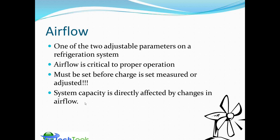System capacity — how much the system is able to cool, heat, or dehumidify the air — can be directly affected by changes in airflow. That's where maintenance factors come into play. If filters get dirty and you choke down airflow, you can affect system capacity, get a blocked or frozen coil, and see overall poor performance and poor dehumidification.